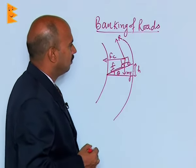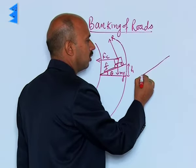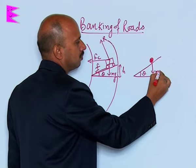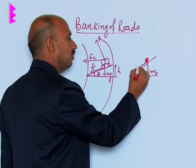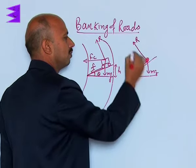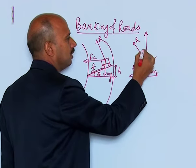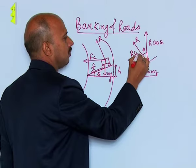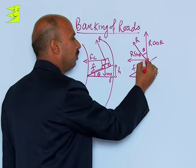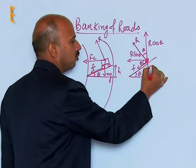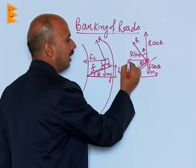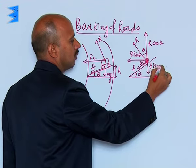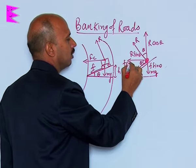Now I will draw the free body diagram. Suppose I have taken this road like this, this angle is theta. I have taken the car as a point object. mg acts here, frictional force to this side, and reaction to this side. We can take this angle as theta. So this is R cos theta and this component is R sin theta. This angle is also theta. So f has two components: f sin theta to this side and f cos theta to this side.